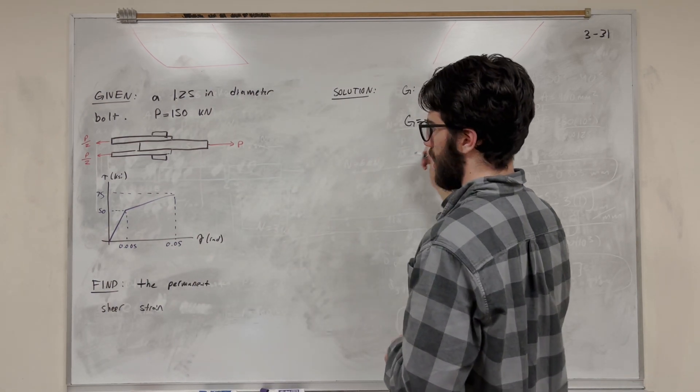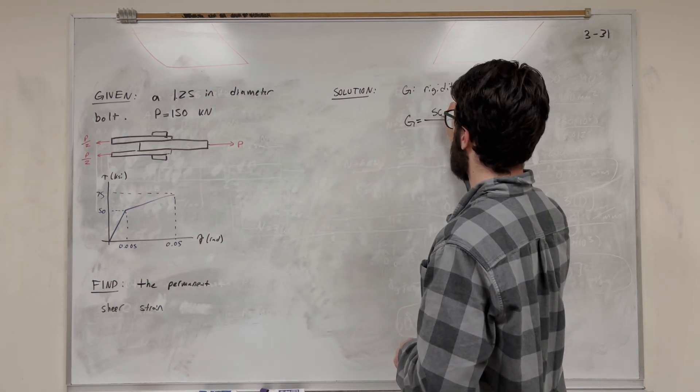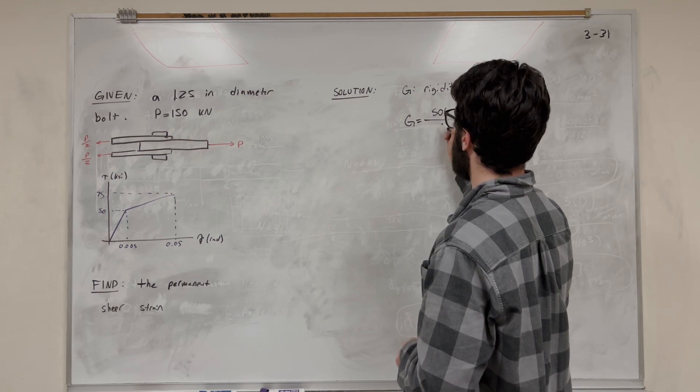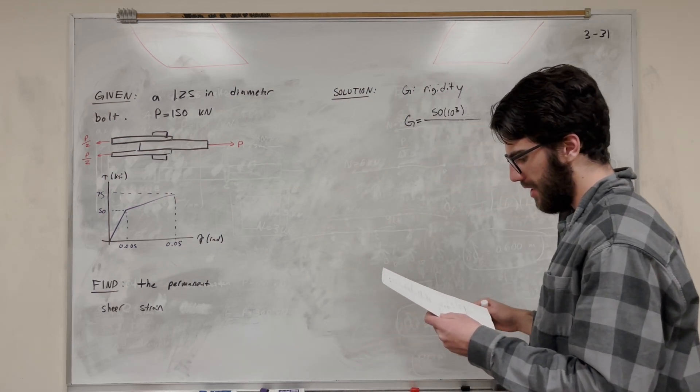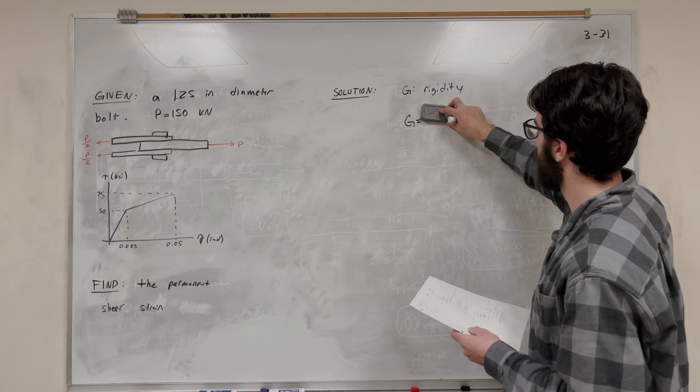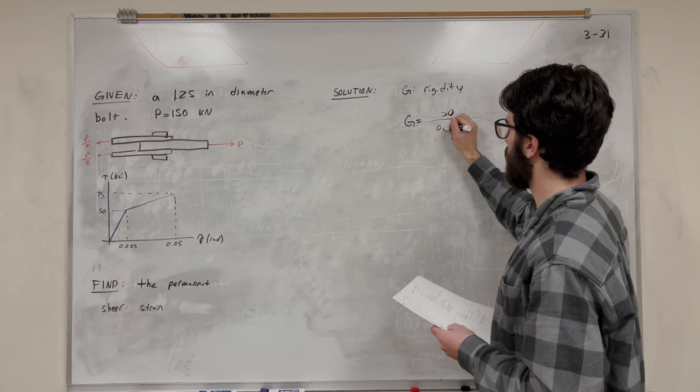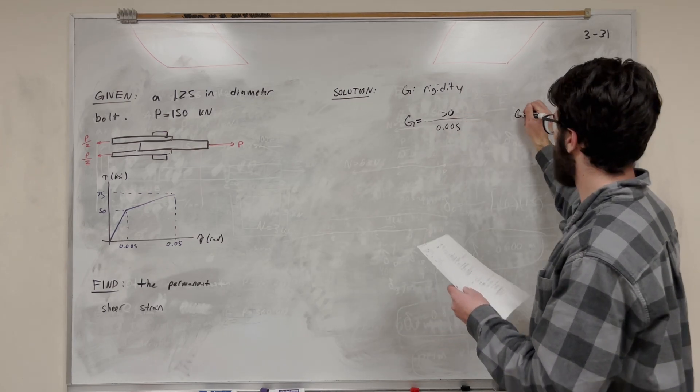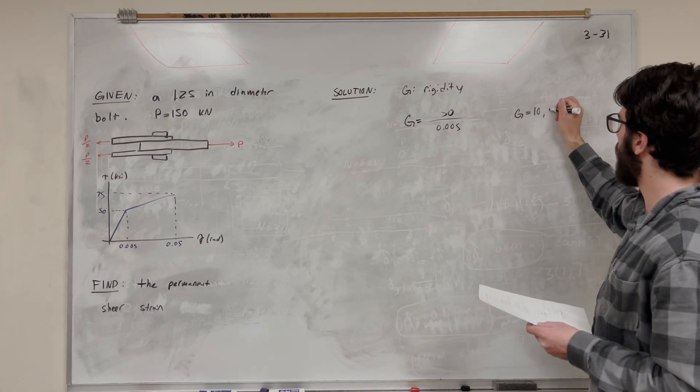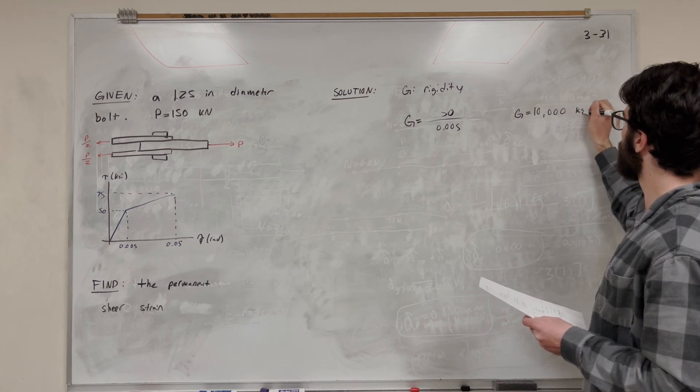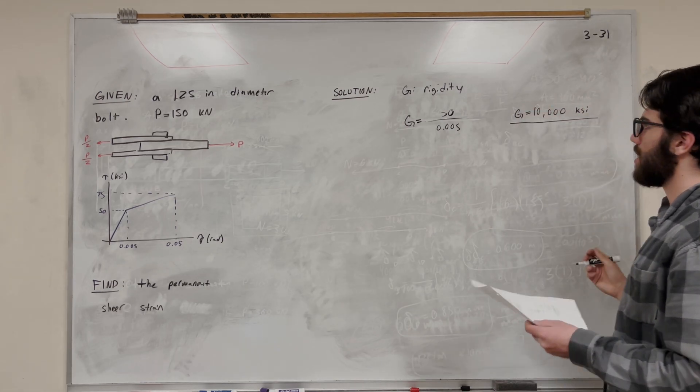That's going to be easy. We're at KSI, so it's going to be 50 over that 0.005. And we're going to find that G is equal to 10,000 KSI. So that's a good number right there.